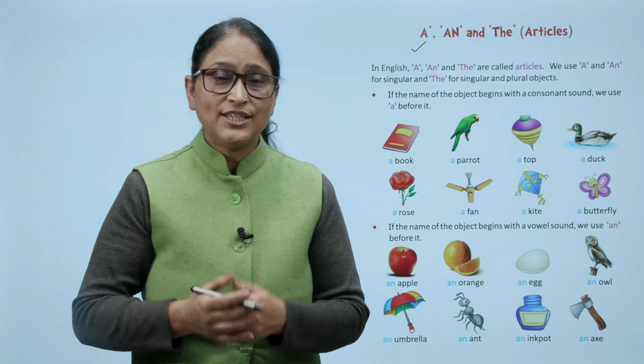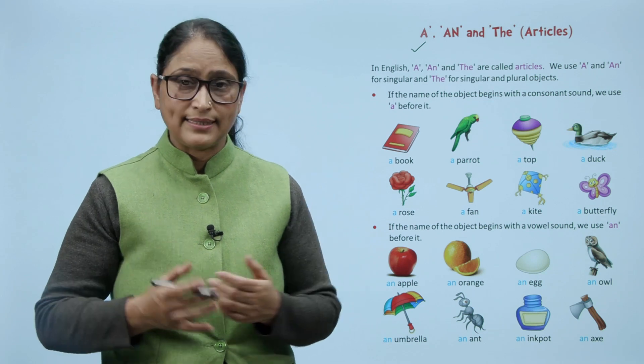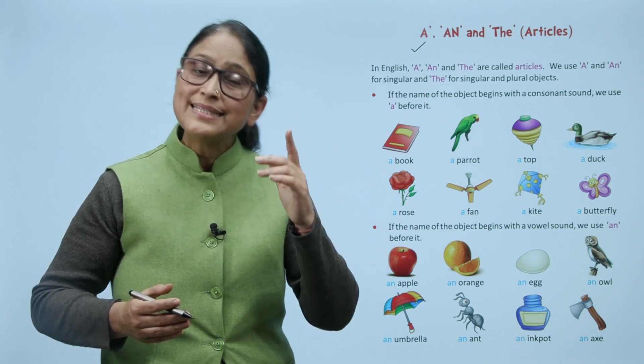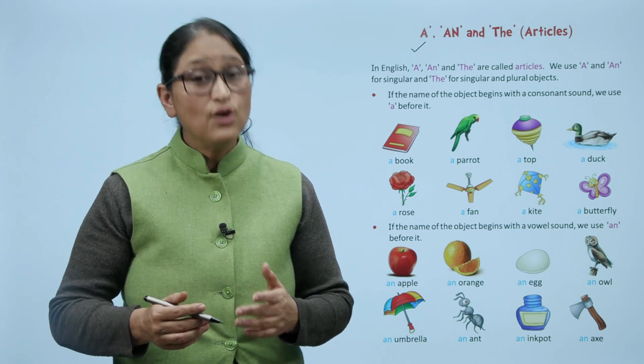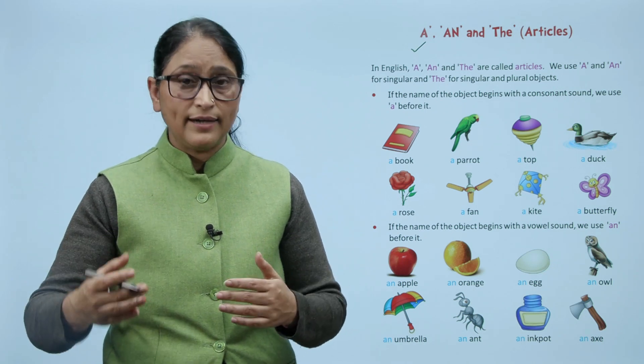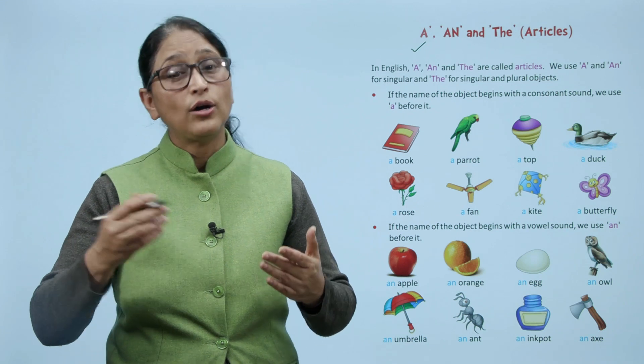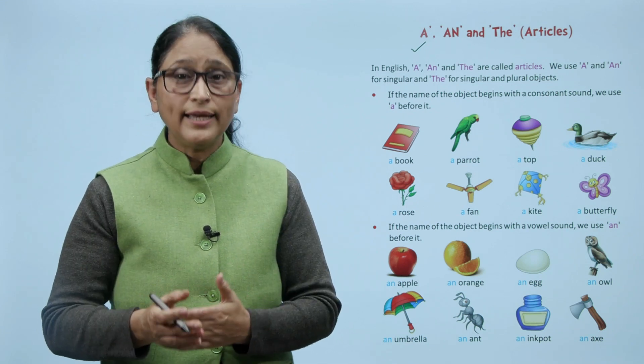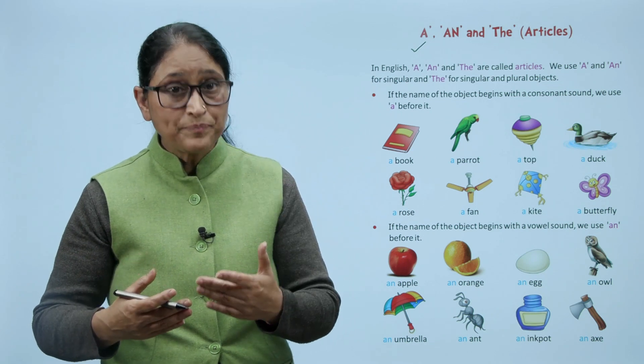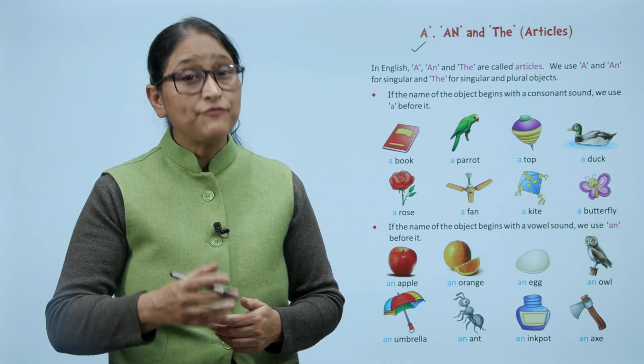In English, A, An, and The are called articles. We use A and An for singular, and The for singular and plural objects. A aur An ko singular ke liye, aur The ko singular aur plural dono ke liye use karte hain.